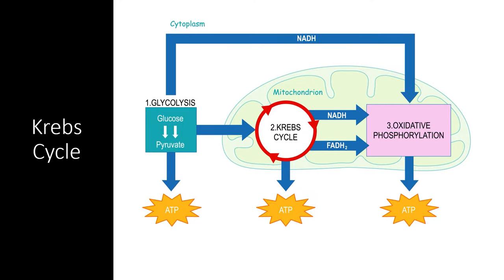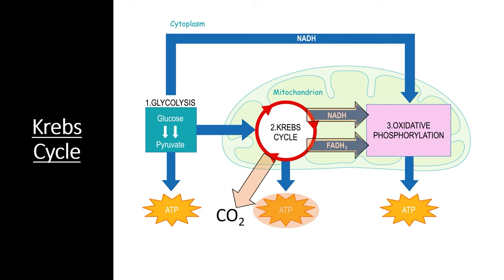If there is oxygen present in a cell, the products of glycolysis will begin the process of aerobic respiration. This process starts with the Krebs cycle. The Krebs cycle produces carbon dioxide as it breaks pyruvate molecules down into smaller and smaller pieces. It also produces a small amount of ATP. But most of the energy extracted in the Krebs cycle is deposited into electron carriers, including NADH and FADH2. Let's take a quick look at the complex cycle that allows this massive transformation of energy.